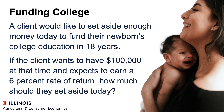To solve this problem, we need to diagram out what our numbers are going to be, look for four of the variables for a time value of money problem, and then solve for the fifth.